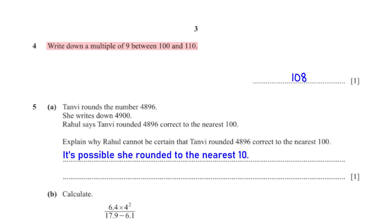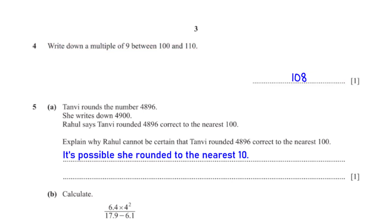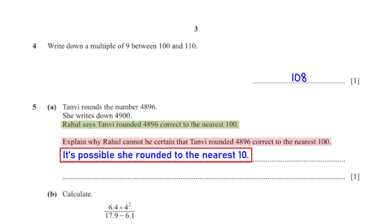Tanvi rounds the number 4896 and writes down 4900. Rahul says Tanvi rounded 4896 correct to the nearest hundred. Explain why Rahul cannot be certain. This is because it's possible she rounded to the nearest ten. The number in the tens position is 9; the digit after it, which is 6, is greater than 5, so we add 1 to 9, giving 10. We replace 9 with 0 and add 1 to 8, giving 4900 rounded to the nearest ten.